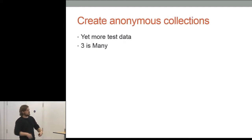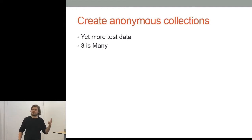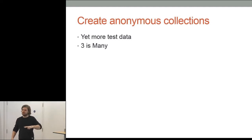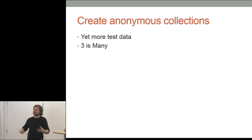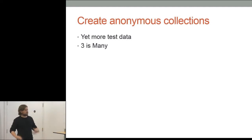AutoFixture can also create anonymous collections. It's very similar to anonymous variables, but it will always create three items in your collection. If you've got one thing, you don't have plural things at all — just a single thing. If you've got two things, you have a head and a tail in a list but no middle. If you've got three things, you have the head, the tail, and the body of the list, and anything else is equivalent to that. So three items in your collection is enough.